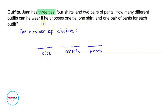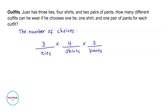For ties, we have three choices. For shirts, we have four choices, and we have two choices for pairs of pants. To get the number of outfits, multiply all the choices: three times four times two, which is equal to 24. We have 24 different outfits.